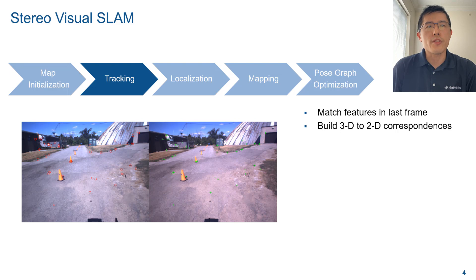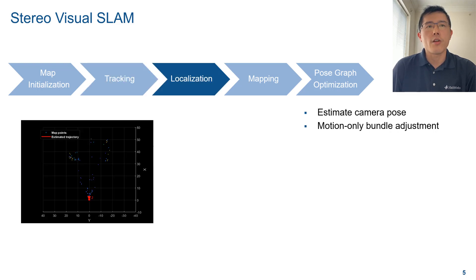Once the map is initialized, you will process each new pair of stereo images as follows. In the tracking stage, you match features of the left image in the stereo pair with the features of the previous left image to build 3D to 2D correspondences. Then, in the localization stage, you can use the correspondences to estimate the camera pose in the world coordinates. To refine the estimation, use motion-only bundle adjustment.